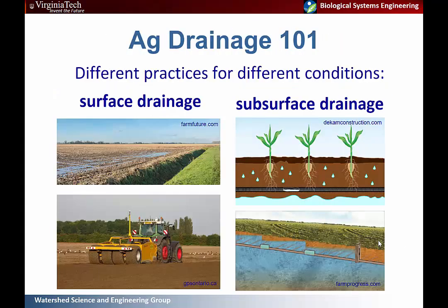Agricultural drainage processes can be broadly divided into drainage of surface water — water affecting the ground surface — and subsurface drainage, which addresses saturation in the root zone. Surface drainage can involve ditching or land leveling and smoothing, while subsurface drainage can be passive drainage systems with submerged drains or controlled systems where you can manage the level of the water table in your fields.